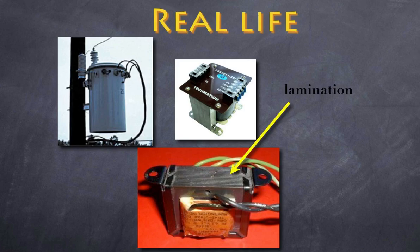To reduce eddy currents, instead of using a solid iron core, the core is laminated — made up of thin metal sheets separated by a thin layer of insulation. This disrupts the eddy currents, so while there may be small eddy currents within each sheet, they are significantly reduced. However, because some eddy currents still form, large-scale transformers need cooling systems to absorb the heat generated.